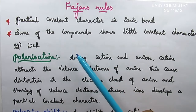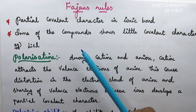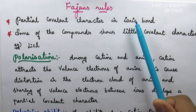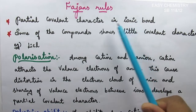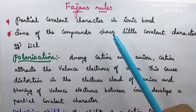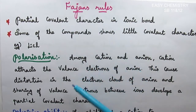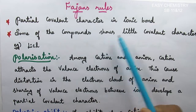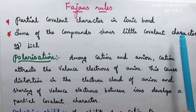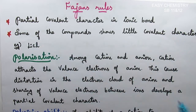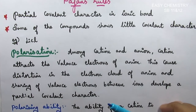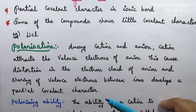We will learn the types of chemical bonds, including the ionic bond. In an ionic bond, there are some covalent characters. Some compounds have a little covalent character — for example, lithium chloride. How do we discuss that? We will understand polarisation.